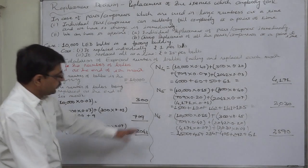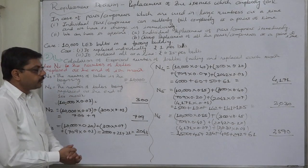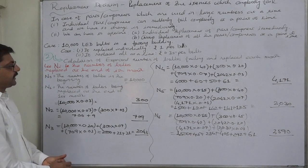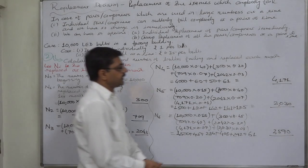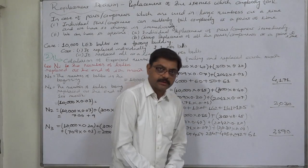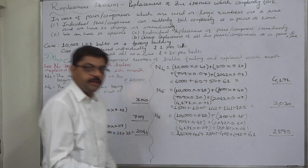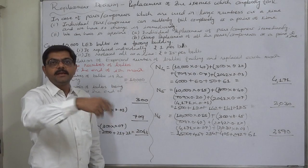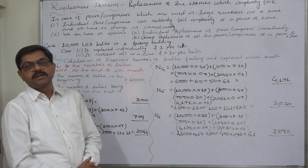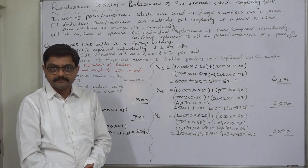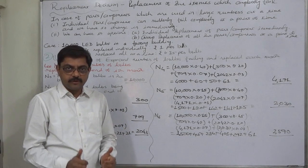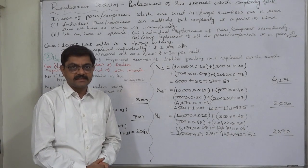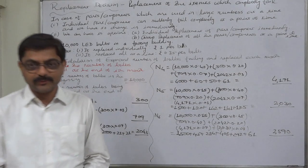This completes step 2 of the solution: the calculation of the expected number of bulbs failing and replaced each month. On the basis of this second step, we can proceed to the third step. We will cover the third step in the next lecture. Thank you.